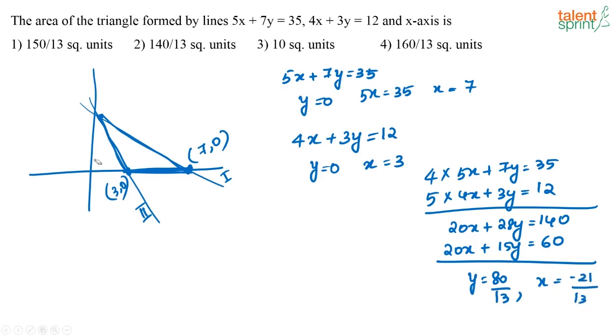Actually these two lines, where do they meet? Let me just redraw it now to scale. They will meet somewhere in the second quadrant because the x value is negative. This is the point where both the lines meet and they meet at minus 21 by 13 and 80 by 13. This is the triangle that we are forming, this is the triangle that we have formed.